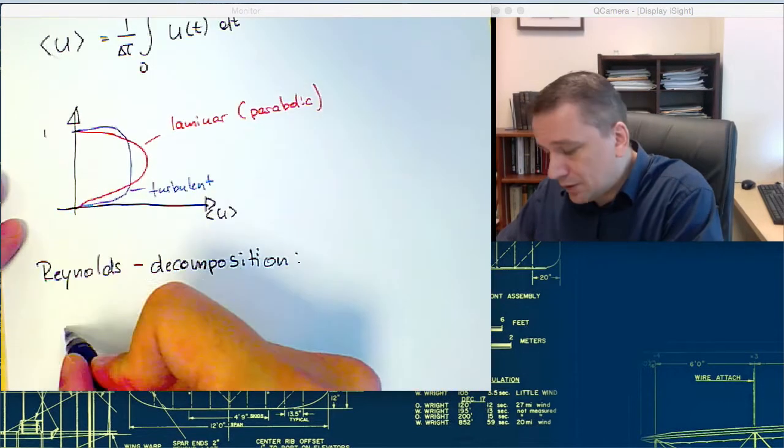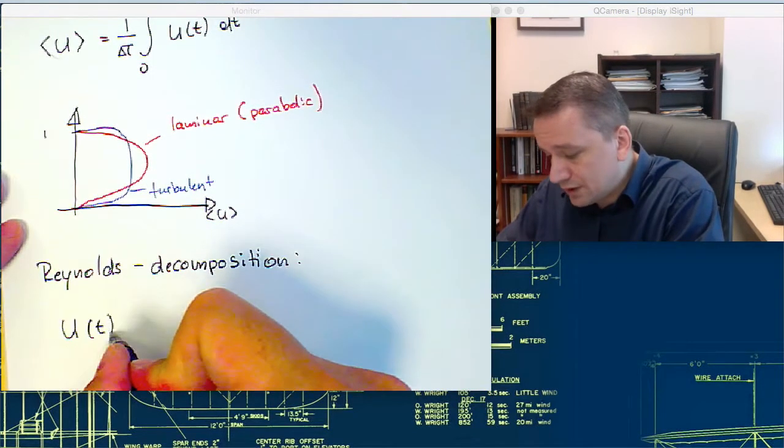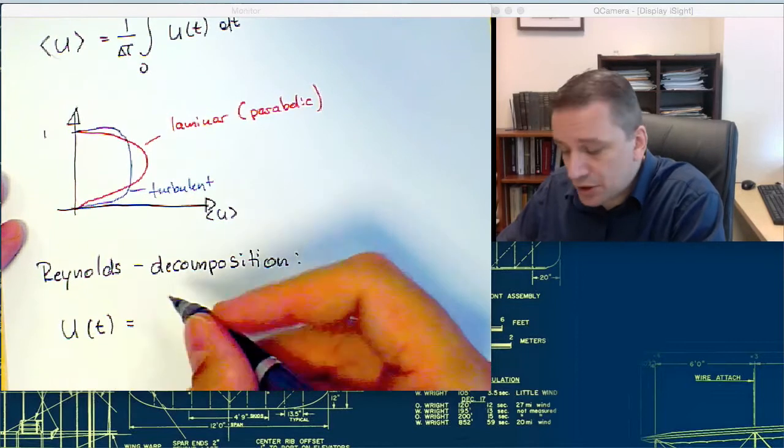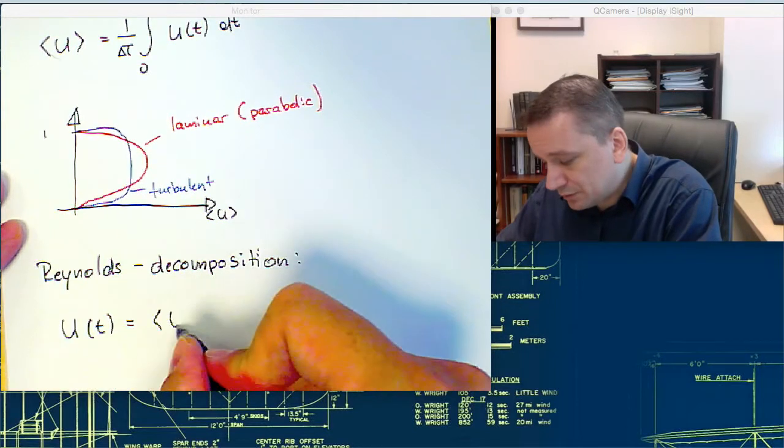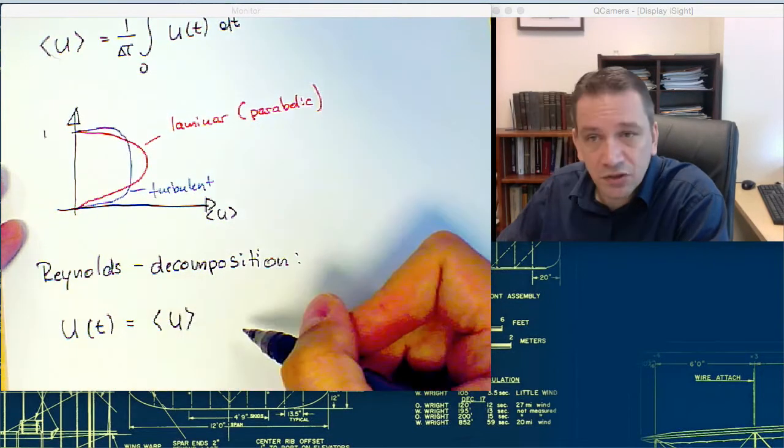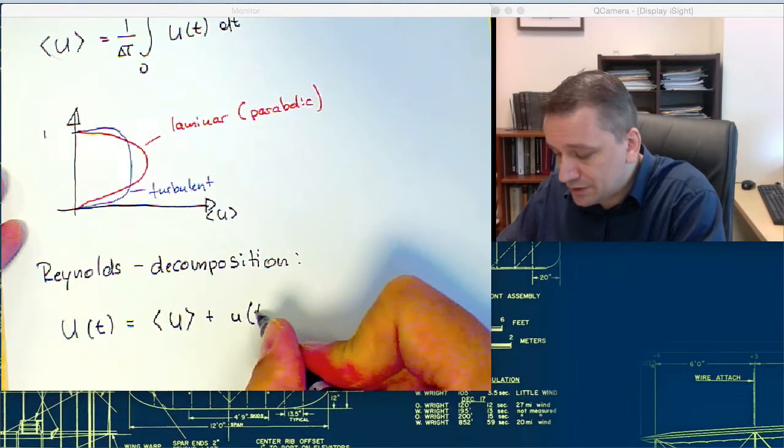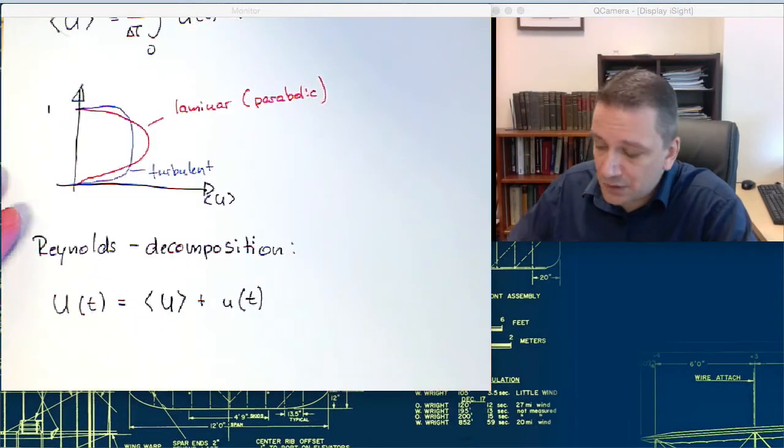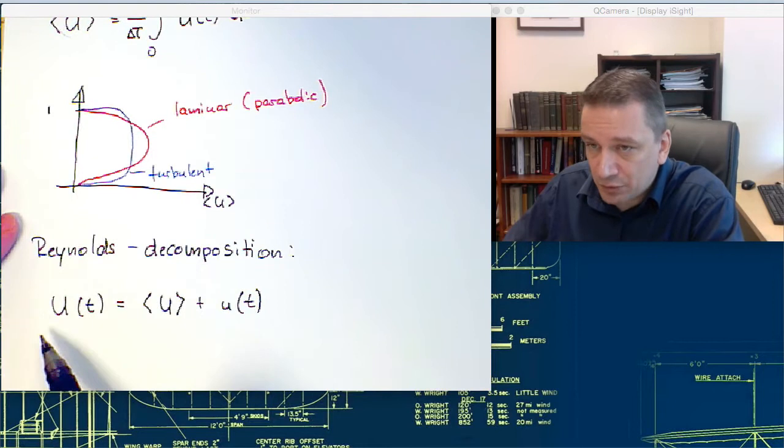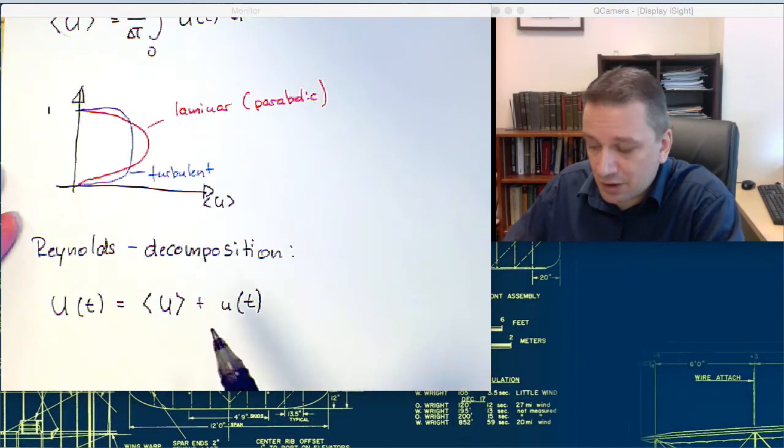Which is our value u as a function of t, and then going to be split up into the mean value, which is independent of t plus the fluctuating part lowercase, which is then a function of t. So I have now split up my original signal into a mean value in the fluctuating part.